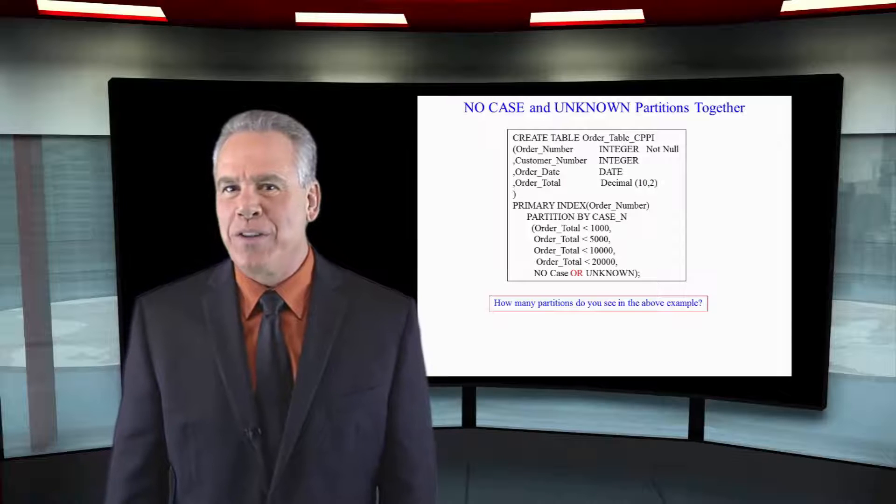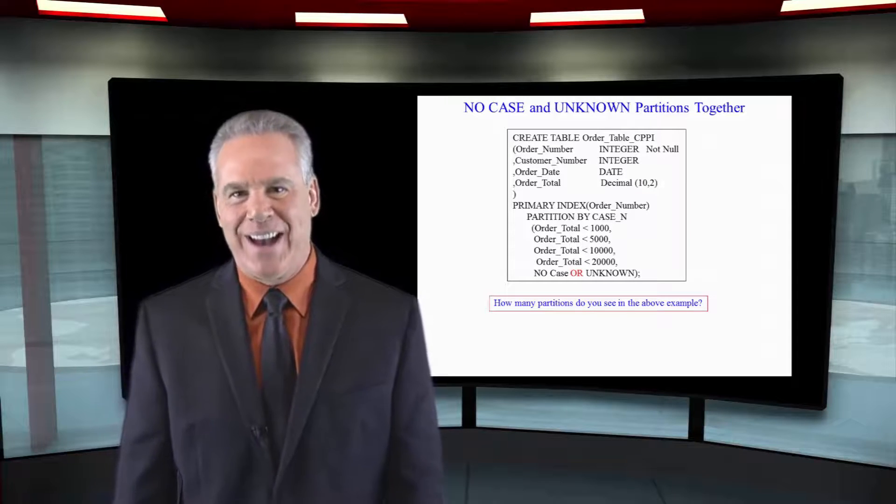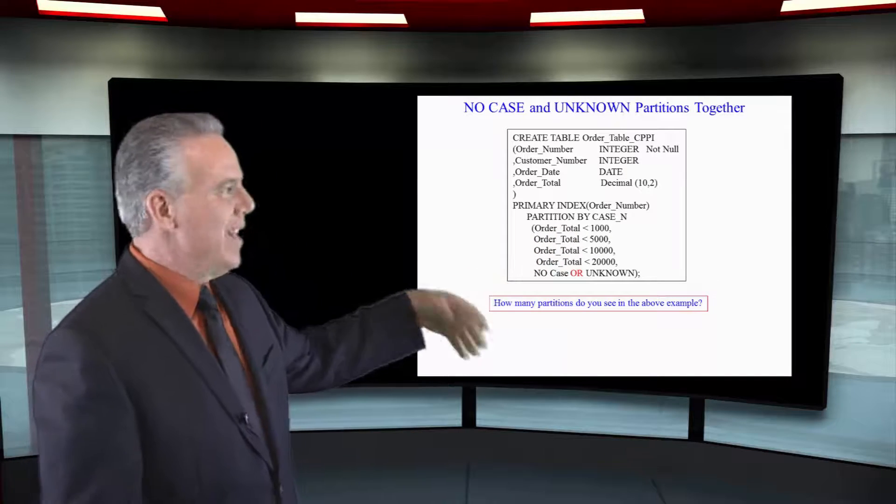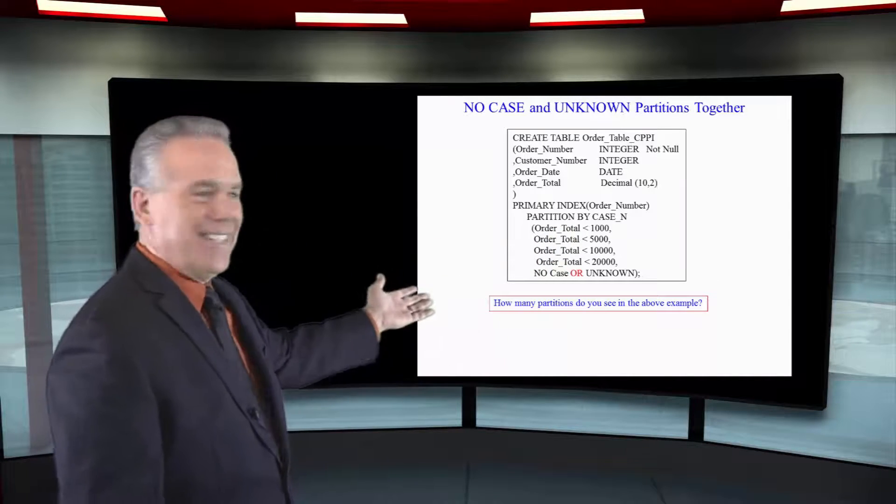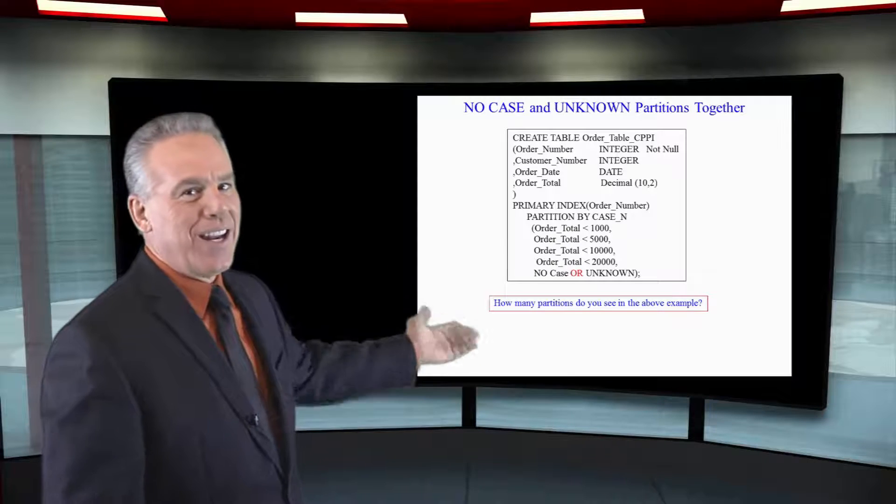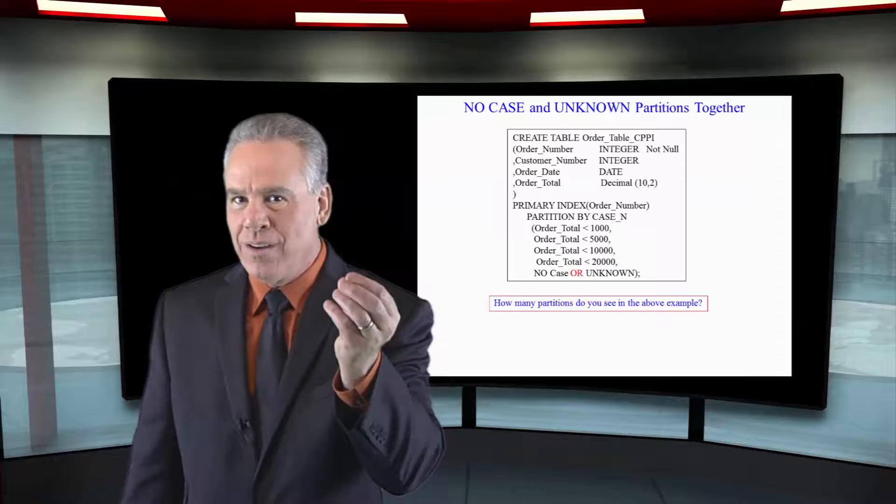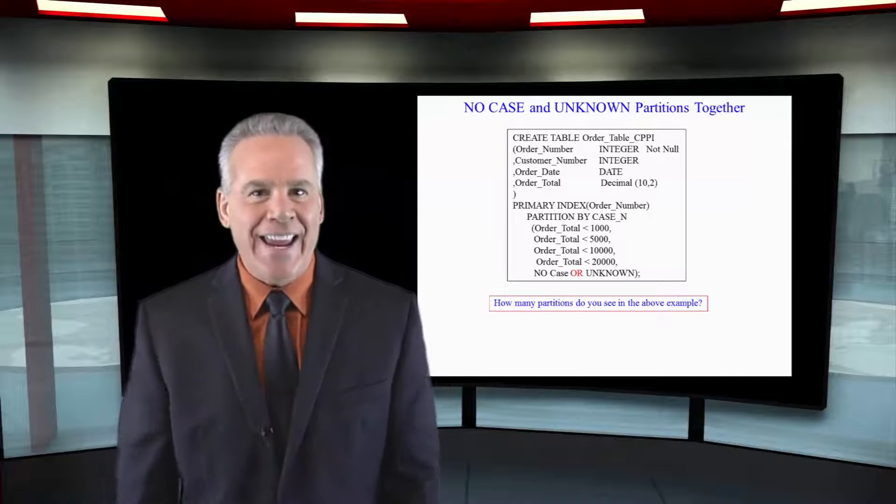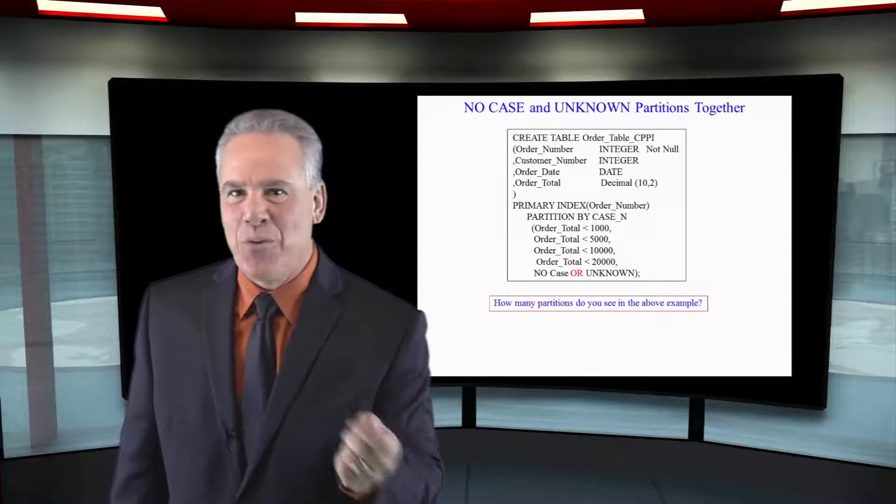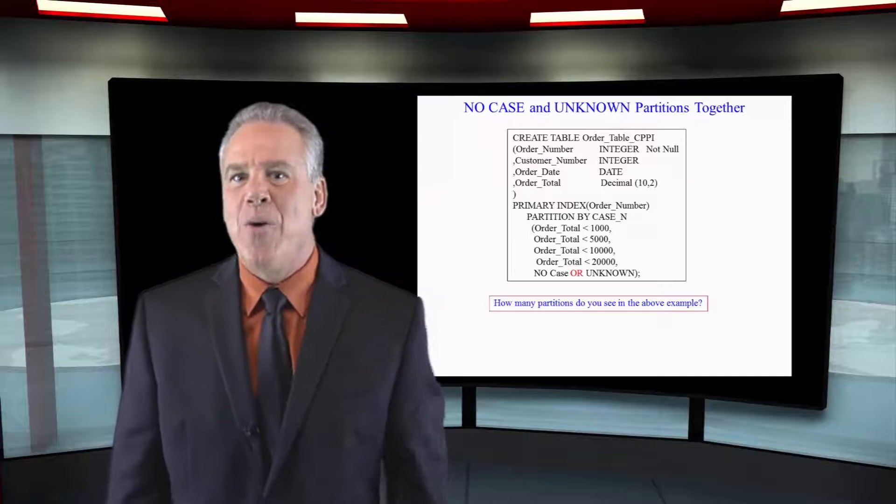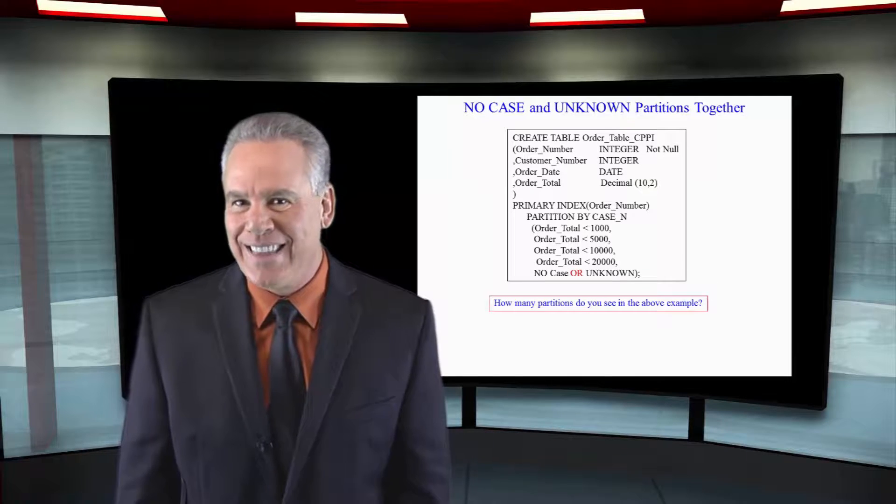There are only five partitions this time. Less than 1,000 for the order total. Less than 5, less than 10, less than 20. And they have combined the unknown, which are the nulls, and the no case, which are greater than or equal to order totals of 20,000.